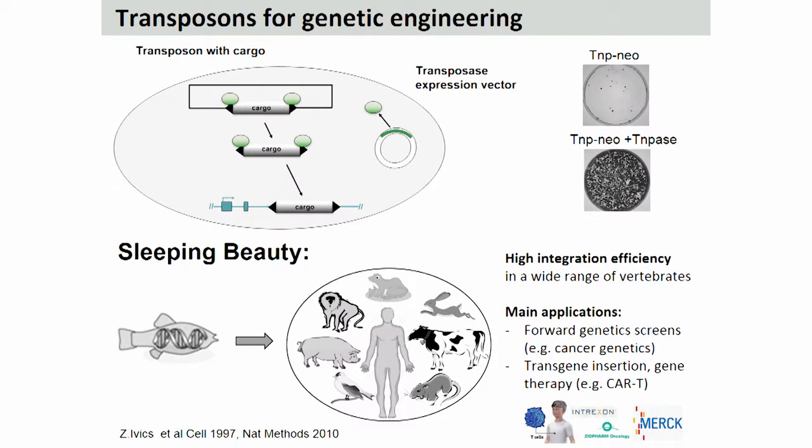One prime example is the Sleeping Beauty transposon, originally derived from fish, but it can very efficiently work in a large range of vertebrate species. It has pioneered applications of transposons in many different genetic applications, from forward genetic screens for cancer genomics to gene therapy like CAR T-cell engineering.